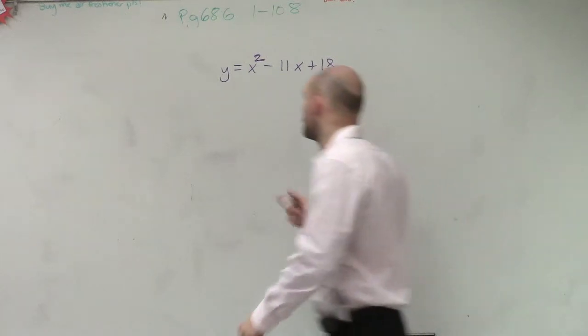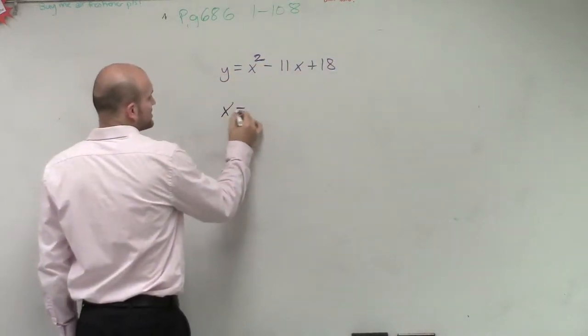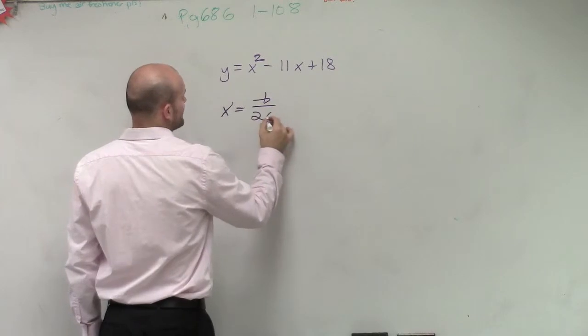The other way we can do it is by following the rule - the axis of symmetry is simply x equals opposite of b divided by 2a.